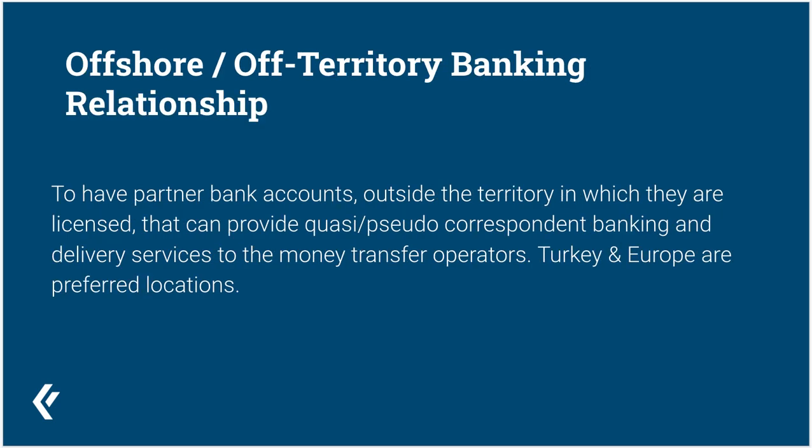The next one was offshore or off-territory banking relationships. So let's say you're based in the U.S. or Canada — you would like to have a bank account that you can control from there that is in the EU, UAE, Turkey, or somewhere else — a bank that provides you a quasi-correspondent banking relationship. Turkey and Europe were the preferred locations.